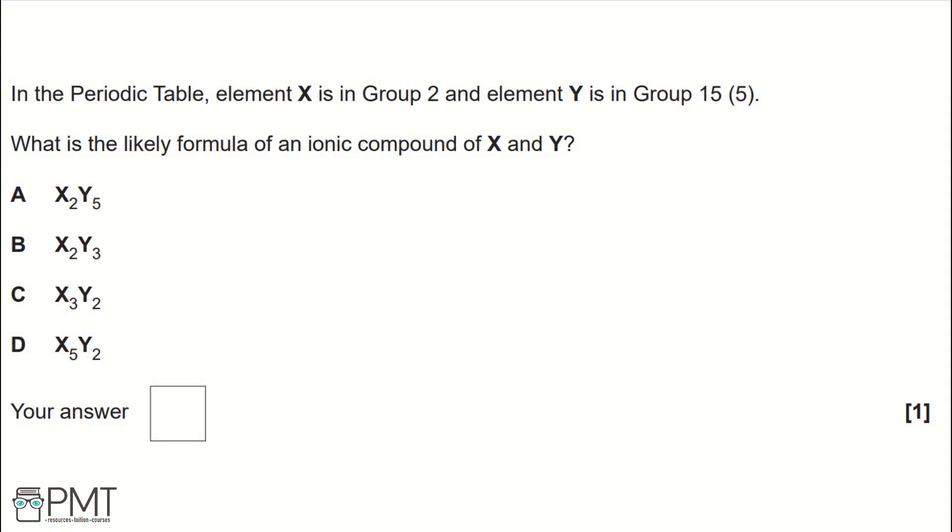In the periodic table, element X is in group 2, and element Y is in group 15 or 5. What is the likely formula of an ionic compound of X and Y?